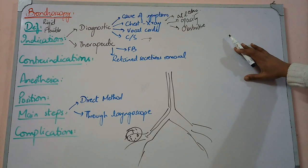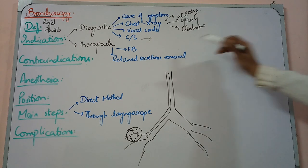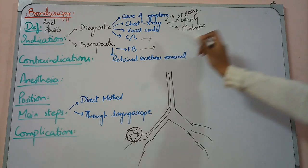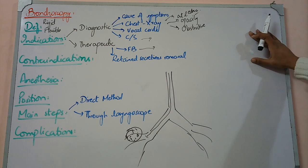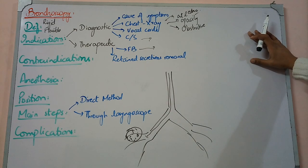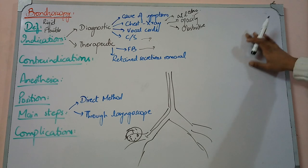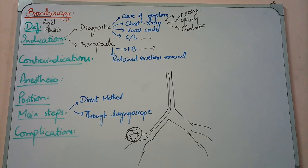The therapeutic purposes of bronchoscopy include removing a foreign body from the bronchus or trachea, and also removing secretions that have accumulated.